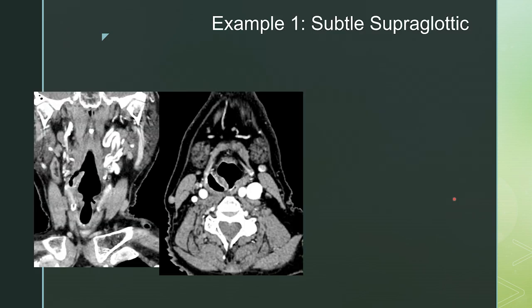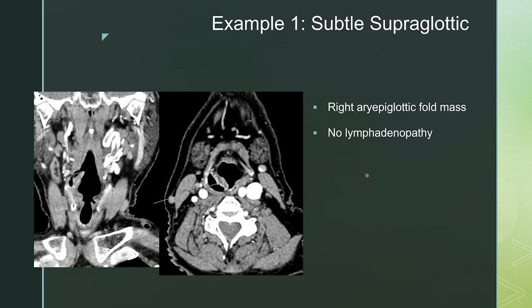Our first example: take a look at these coronal and axial images. You can see that this aryepiglottic fold is nodular and thickened on the coronal view, and nodular and thickened on the axial view as well. So we have a right aryepiglottic fold mass, no lymphadenopathy on these images, distant mets not assessed — this is a T1N0MX supraglottic cancer.